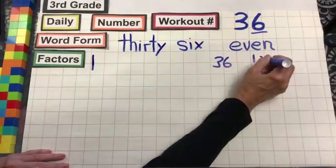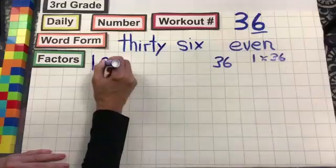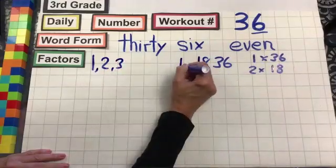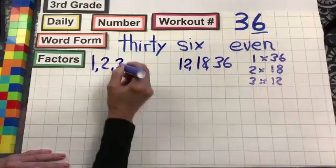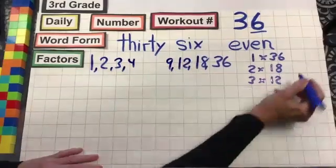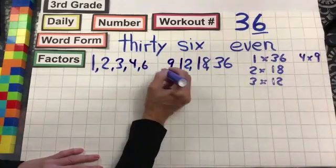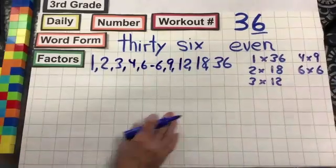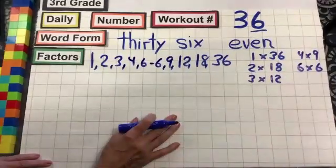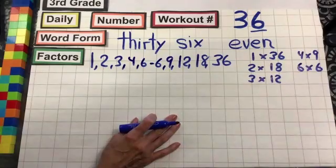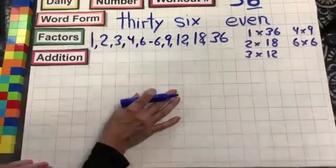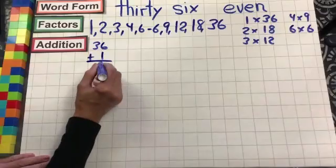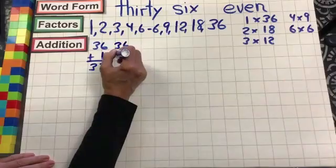2 times 18 equals 36. 3 goes in 12 times — 3 times 12 is 36. 4 times 9 is 36. And 6 times 6 is 36. You can do a lot of things with the number 36.